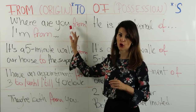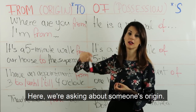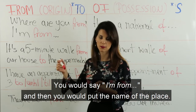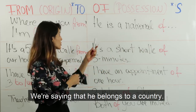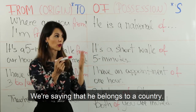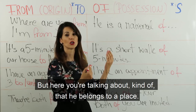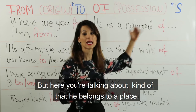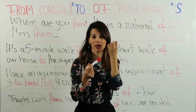Let's continue with different sentences. 'Where are you from?' من وين أنت؟ Here we're asking about someone's origin. عم نحكي عن أصل شخص. You would say 'I'm from' and then put the name of the place. بتقولوا أنا من وبتحطوا اسم المكان. In this sentence, 'he is a national of' — we're saying that he belongs to a country. That's another way to talk about someone's origin using 'of'. فبعدنا عم نحكي عن كلمة 'of' بمعنى إمتلاك أو الملكية — هو تابع لهالمكان.